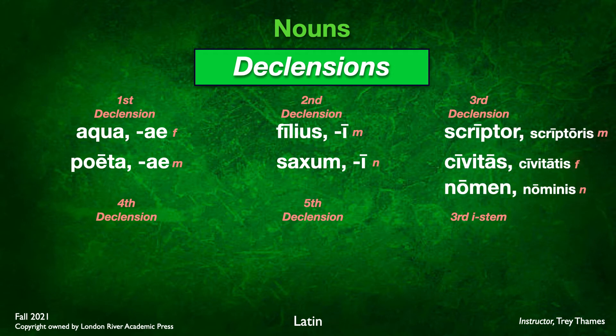Third declension — we have masculine, feminine, and neuter forms, with a couple of different examples or paradigms: scriptor, scriptoris; civitas, civitatis; nomen, nominis.